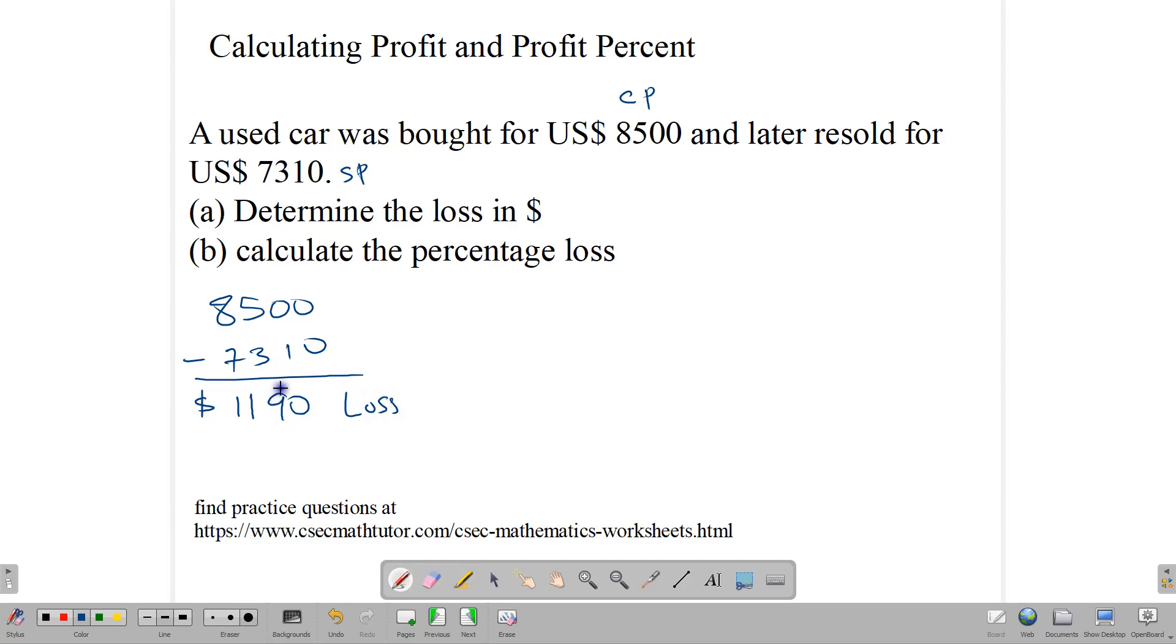So this is the loss in terms of money. That's the amount of money the person would have lost. And now the loss percent, we put the loss over the cost price and multiply by 100, which means that we're going to write $1,190 over the cost price, which was $8,500.